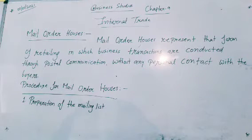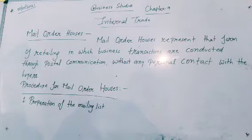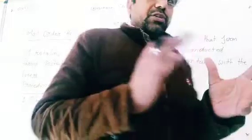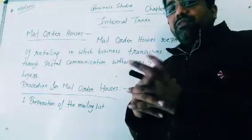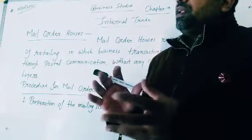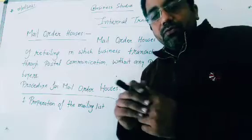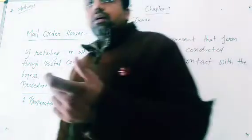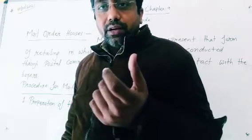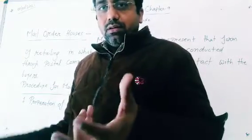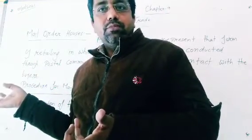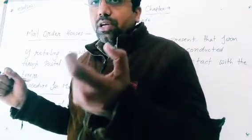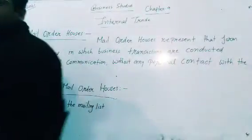A list of potential consumers is prepared through different sources like telephone directories, list of members of clubs, or trade associations. First, we collect data of different types of consumers from different locations. After that, we follow up to ask whether they want to purchase that type of item or not. That type of directory is also available in the BSNL office, provided by telecommunication companies. So on that basis, we prepare the mailing list.